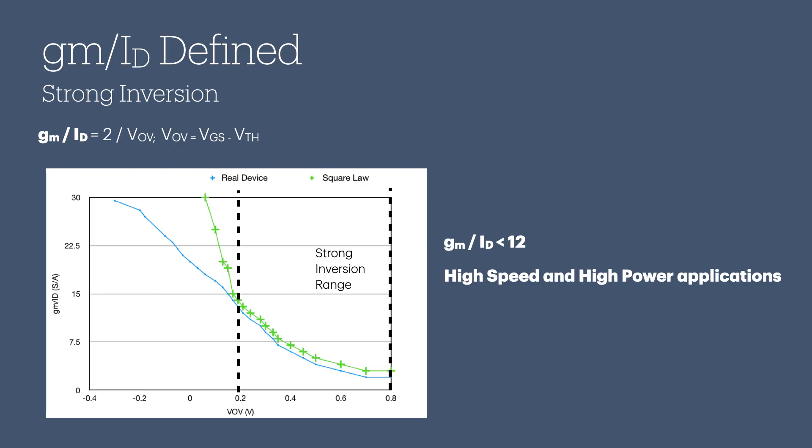Let's keep going. The transistor's GM over ID ratio changes based on its inversion level. First up is strong inversion. Looking at the blue curve, you'll notice strong inversion starts when GM over ID falls below 12. In this region, the classic square law is still accurate, so you can use it to predict the transistor's behavior. Strong inversion means there's a large amount of inversion charge under the gate. The channel is full. With more charge, the transistor can deliver a higher drain current. This extra current lets you charge load capacitance faster, which is ideal for high-speed circuits. The downside is that more current also leads to greater power consumption. You'll see the strong inversion region located between the two dashed lines on the graph.